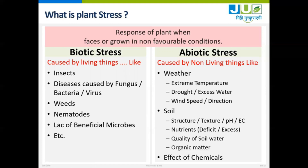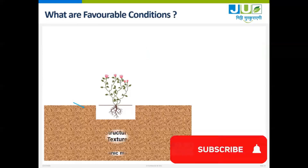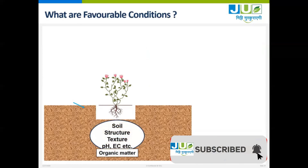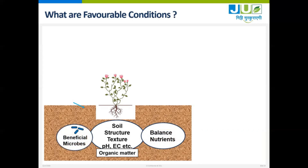Let us understand what are the favorable conditions for the plant. From the soil, it is soil structure, texture, pH, EC, organic matter, then balanced nutrients — whatever the plant needs should be available in the soil — and beneficial microbes. All these things the plant takes from the soil, so all these things should be favorable.